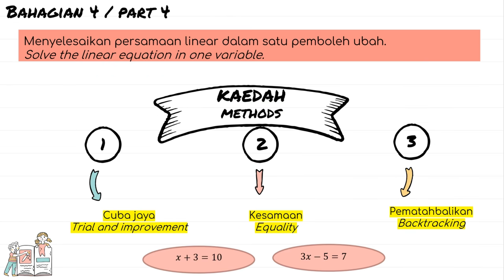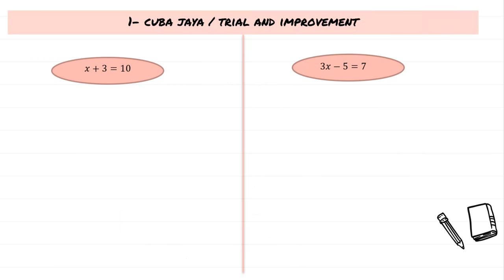For part 4, we are going to solve linear equations in one variable. There are three methods: the first is trial and improvement method (Cuba dan Jaya), the second is the equality method (kesamaan), and the third is the backtracking method (pematah balikan). I will demonstrate two examples using each of these three methods.